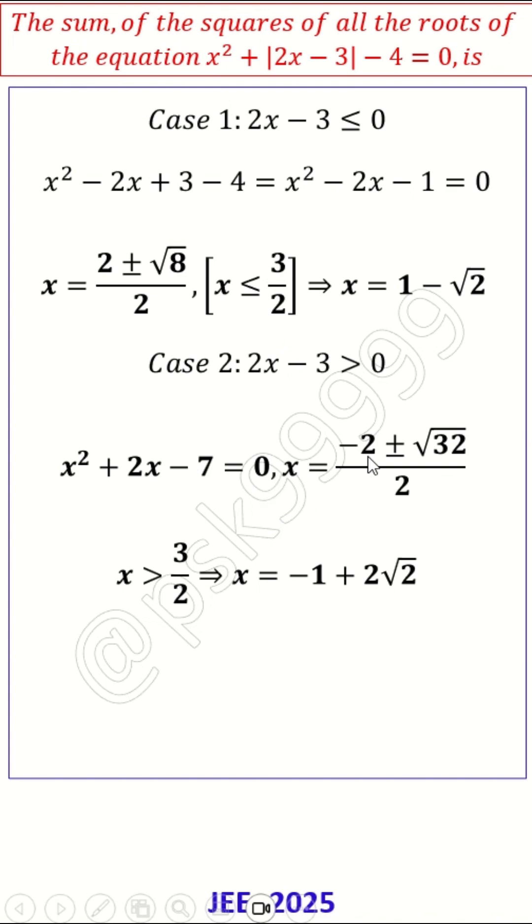Here, x = (-2 ± √32)/2. But only one of the roots satisfies the given condition x > 3/2. That is -1 + 2√2.